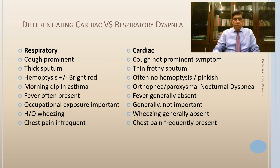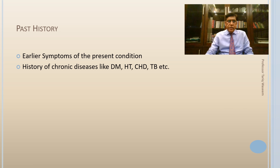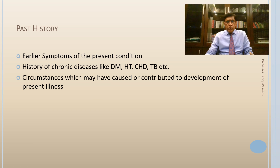Past history is important — it may reveal earlier symptoms of the present condition. Ask about known history of diabetes, hypertension, coronary heart disease, or tuberculosis, which may have bearing on current symptoms. Circumstances that contributed to the present condition — such as a stable heart failure patient getting a chest infection causing acute decompensation, or a COPD patient getting an acute exacerbation — are important to identify. Note whether the patient is already a known smoker or has non-documented chronic disease.